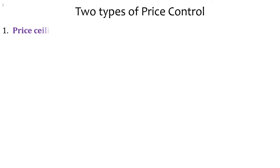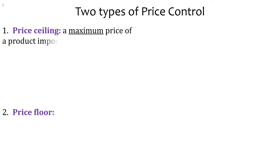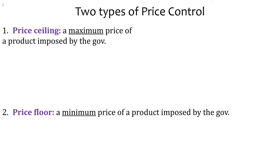There are two types of price control. One is a price ceiling and the other is a price floor. The ceiling is on the top and the floor is on the bottom. So the ceiling would be a maximum price, whereas the floor would be a minimum price. These are things that the government imposes — laws that if somebody breaks them, they can go to jail.